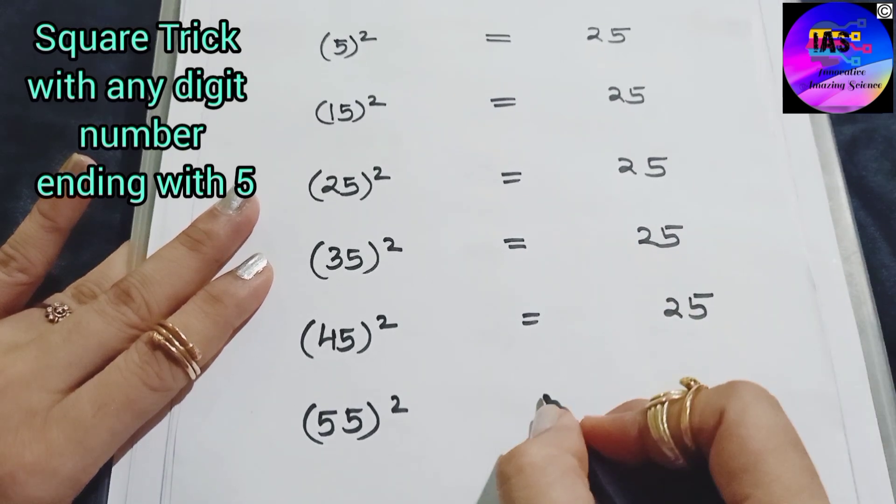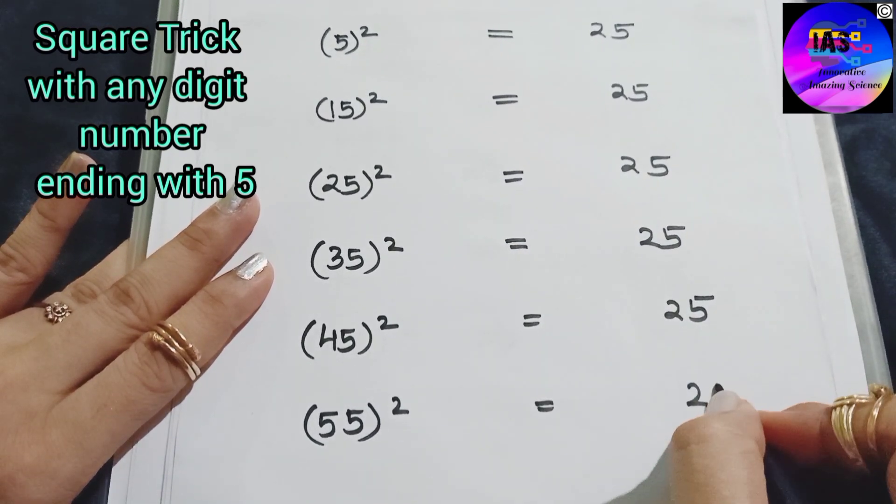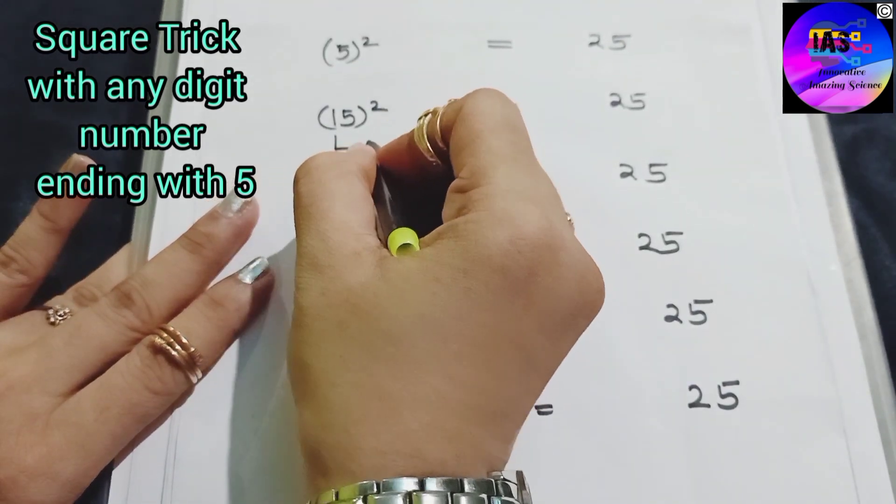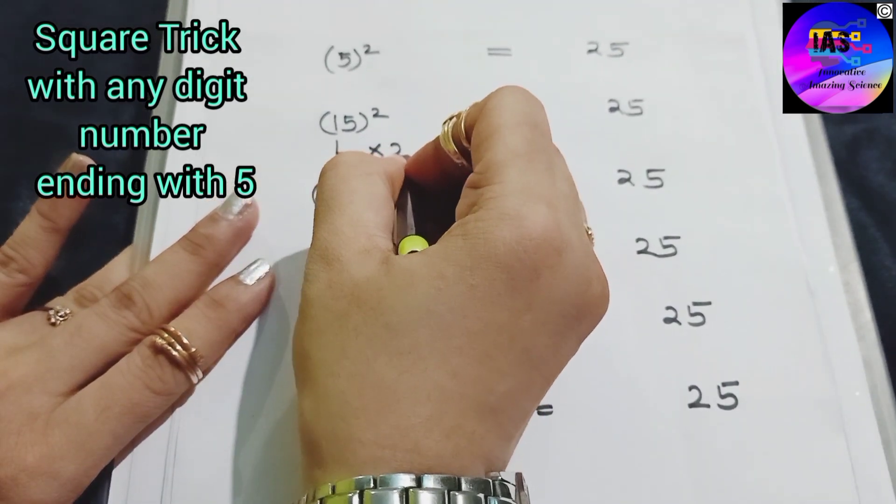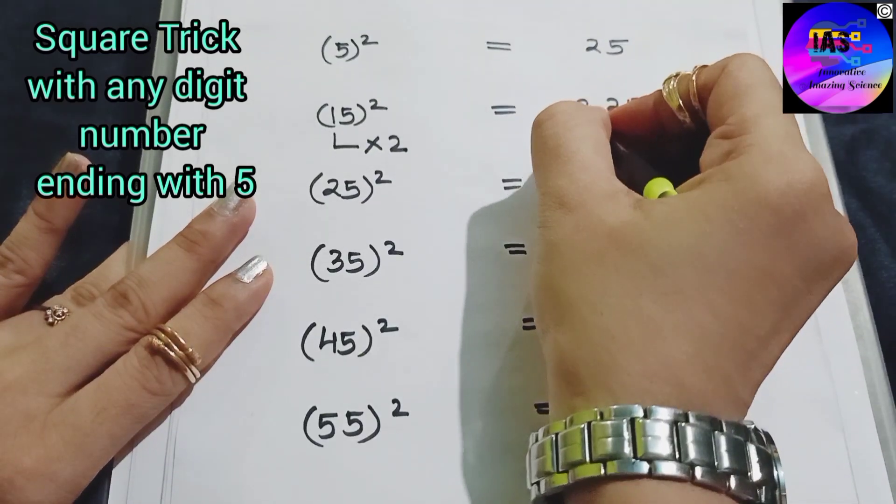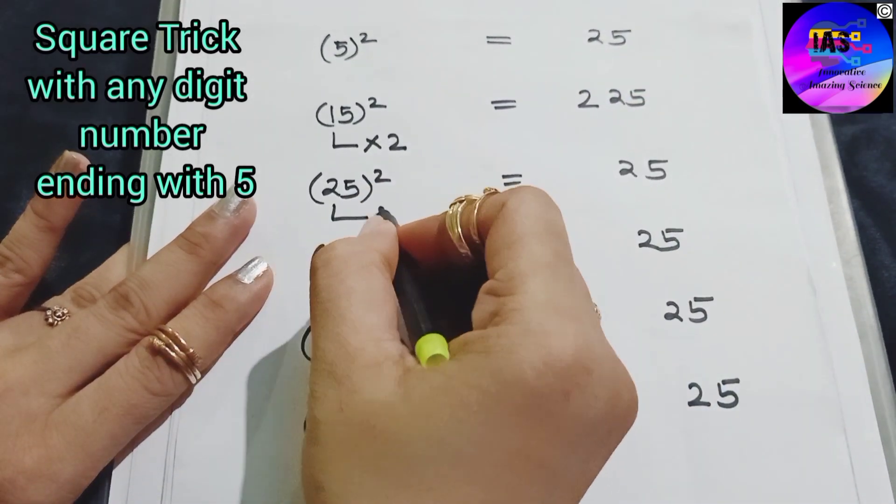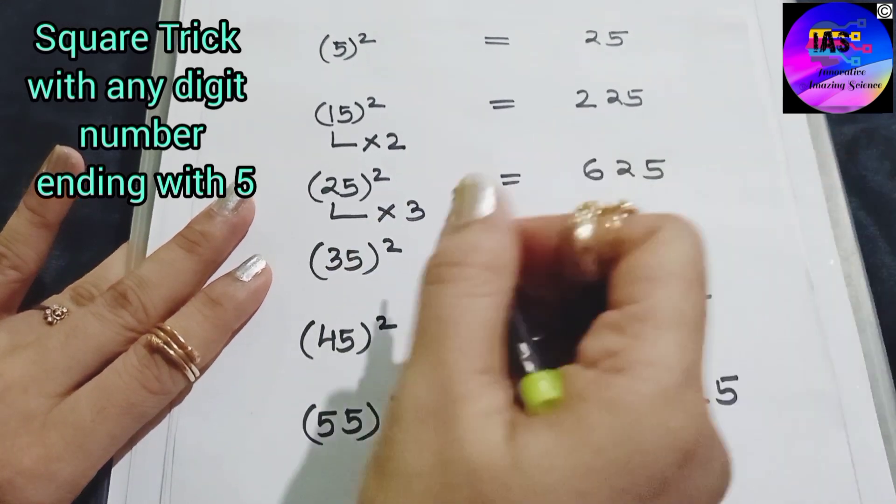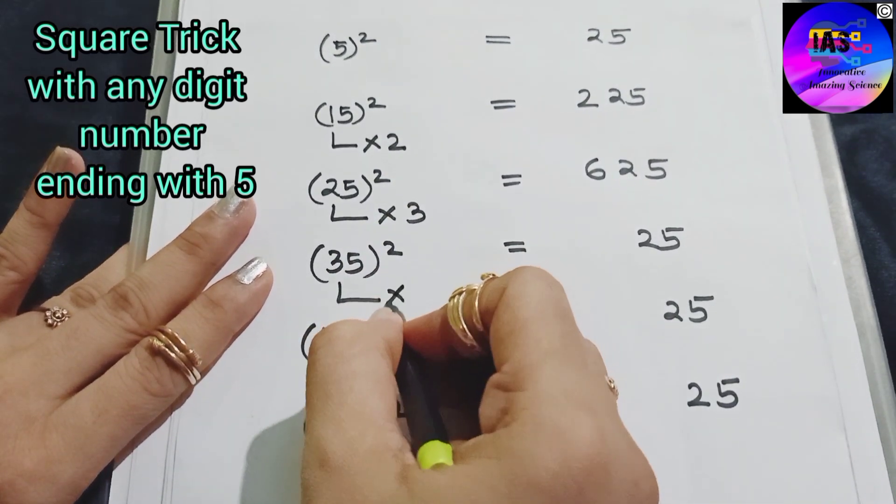So we have written numbers till 55. Now let's see what is the actual answer for 15 square. We have to multiply with some number and write the answer.